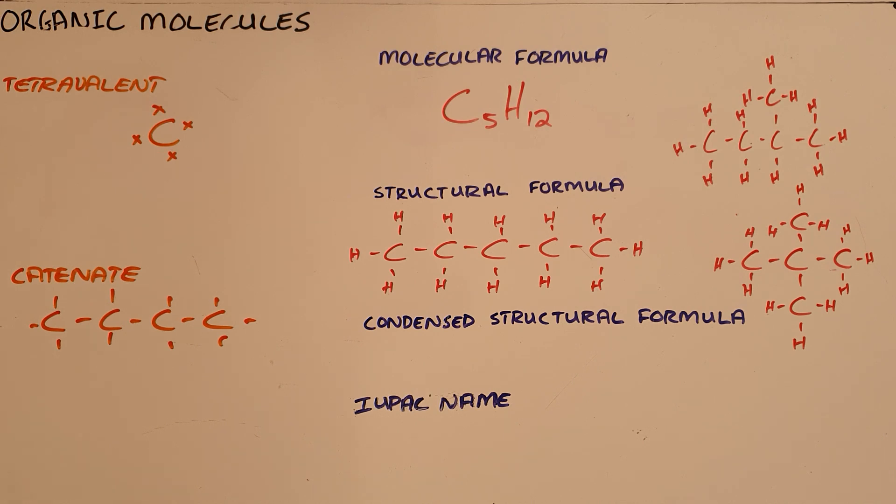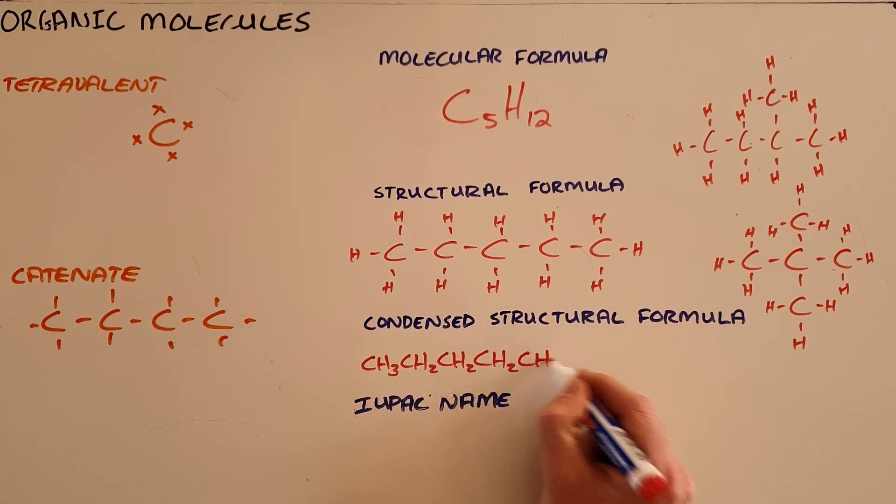A slightly simplified version of structural formula is called condensed structural formula, where each carbon is shown with the number of hydrogens or various other atoms attached to it. So we say this carbon here has three hydrogens, this one has two, two, two, and then the final carbon being CH3.